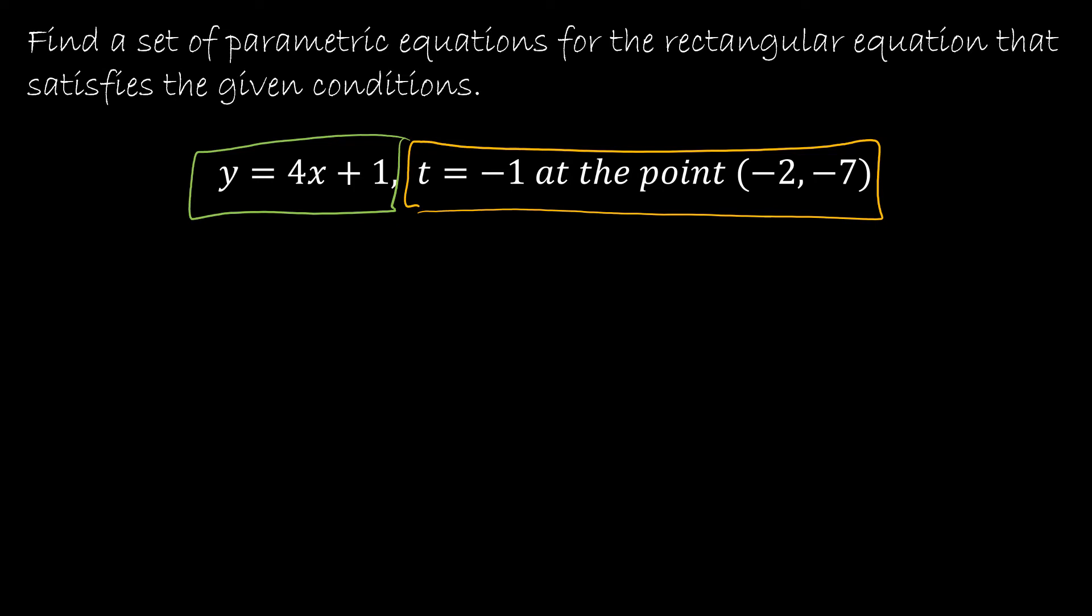So really all that means is if I were to make my little table, when t is negative 1, x is negative 2, y is negative 7. So I can make up some value or some relationship based on the fact that when t is negative 1, x is negative 2. So I could say x is equal to t minus 1. That's one way I could do it. And again, there's infinitely many correct ways to do this. So this is one correct way.